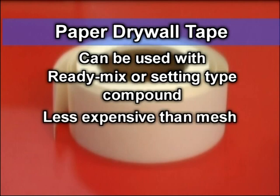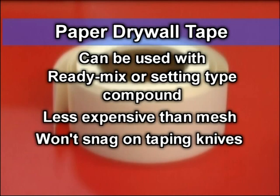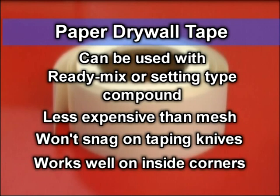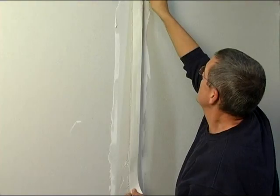Paper tape may be used with either ready-mix or setting type joint compound. It's less expensive, and it won't snag on taping knives as readily as mesh tape will. It also works well on inside corners because you can crease it to work it in easily.